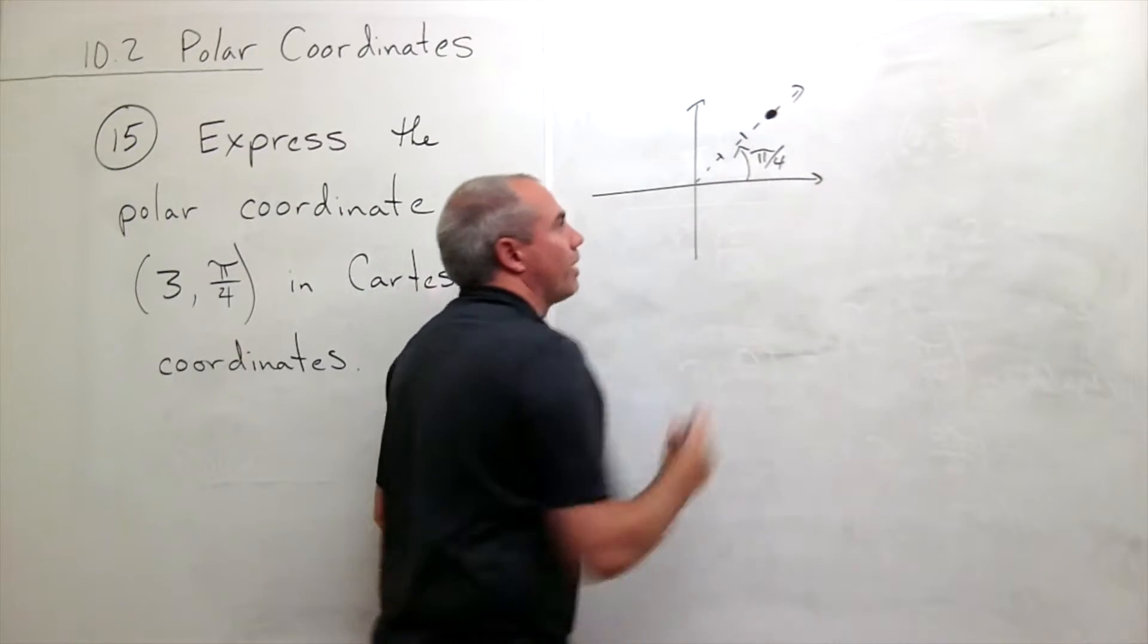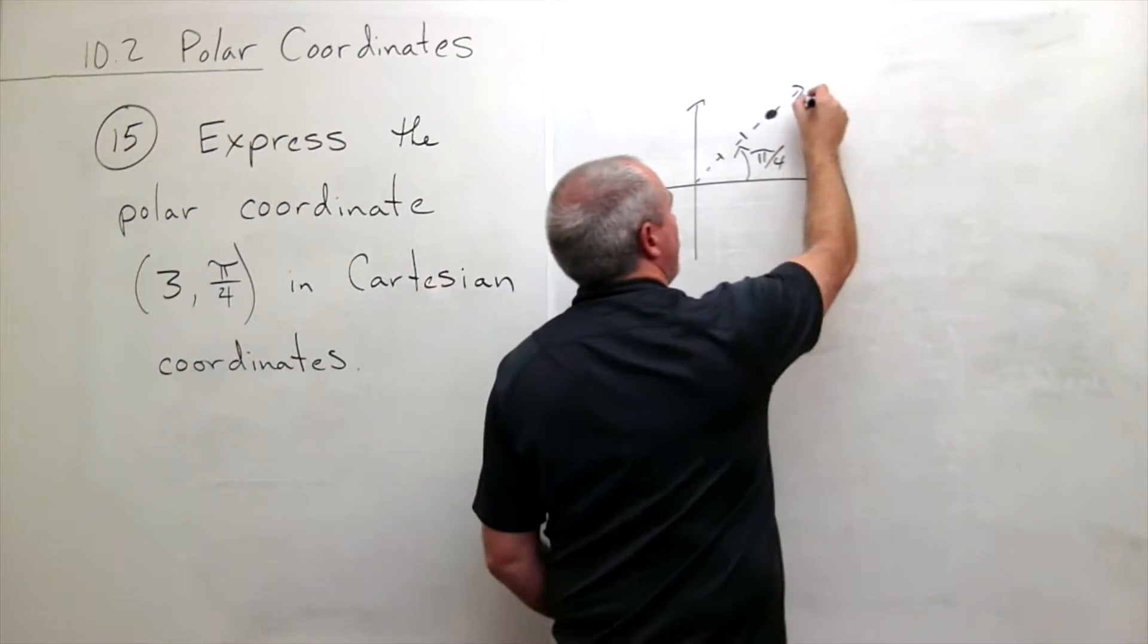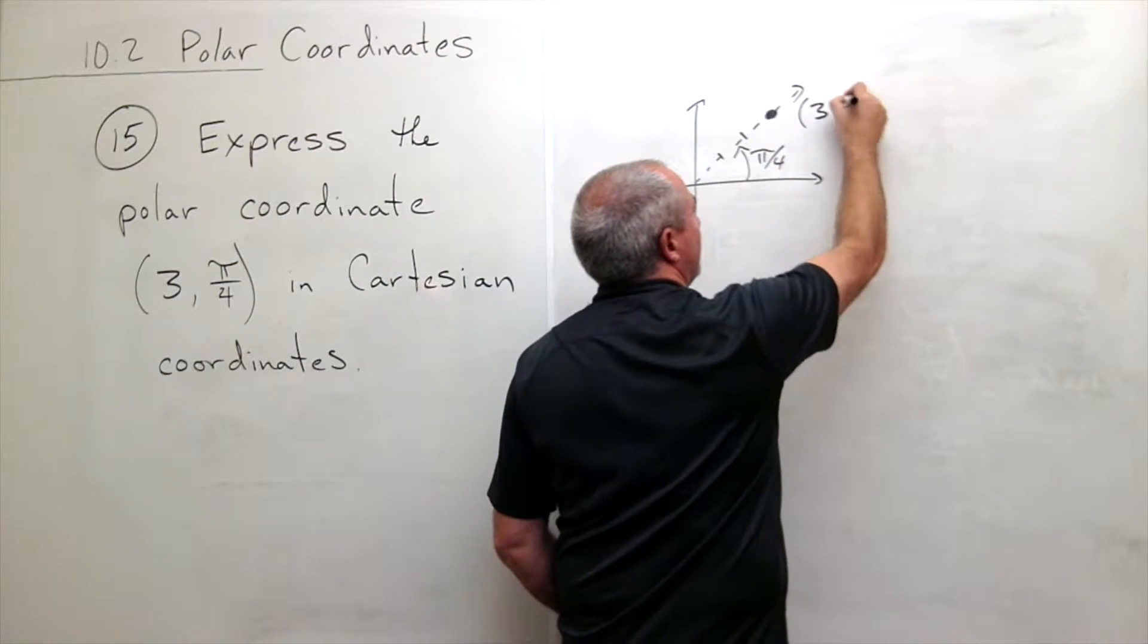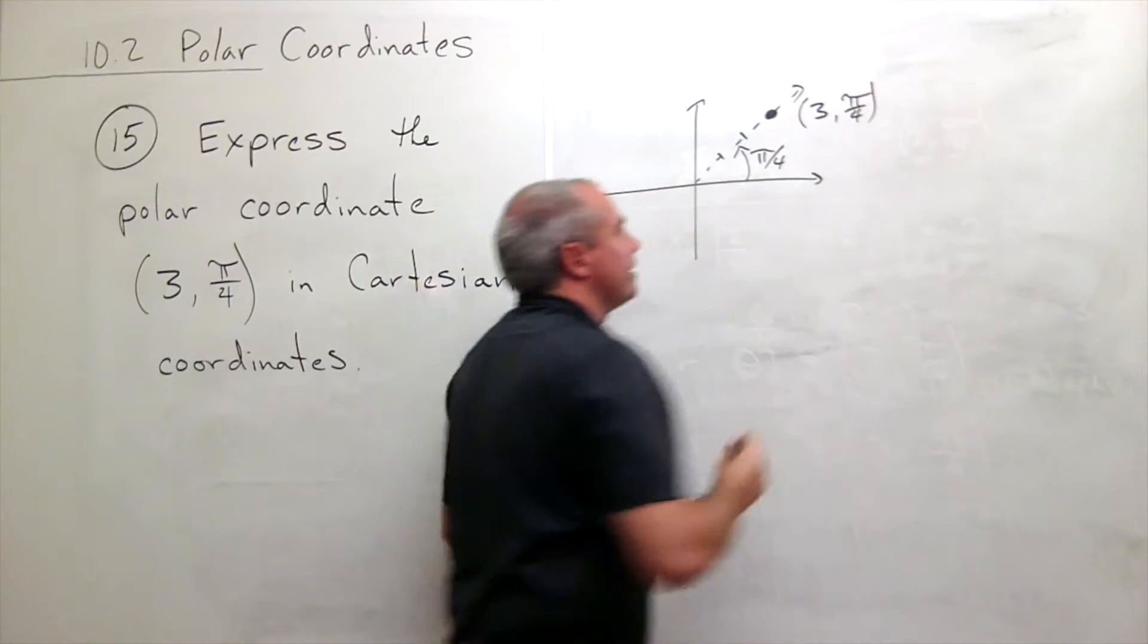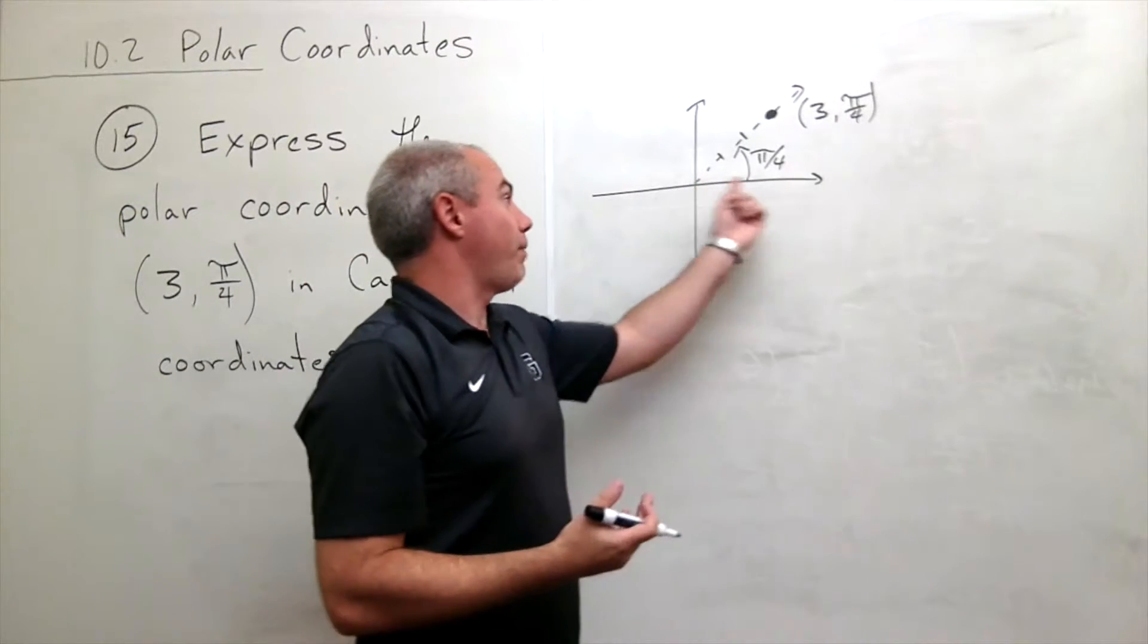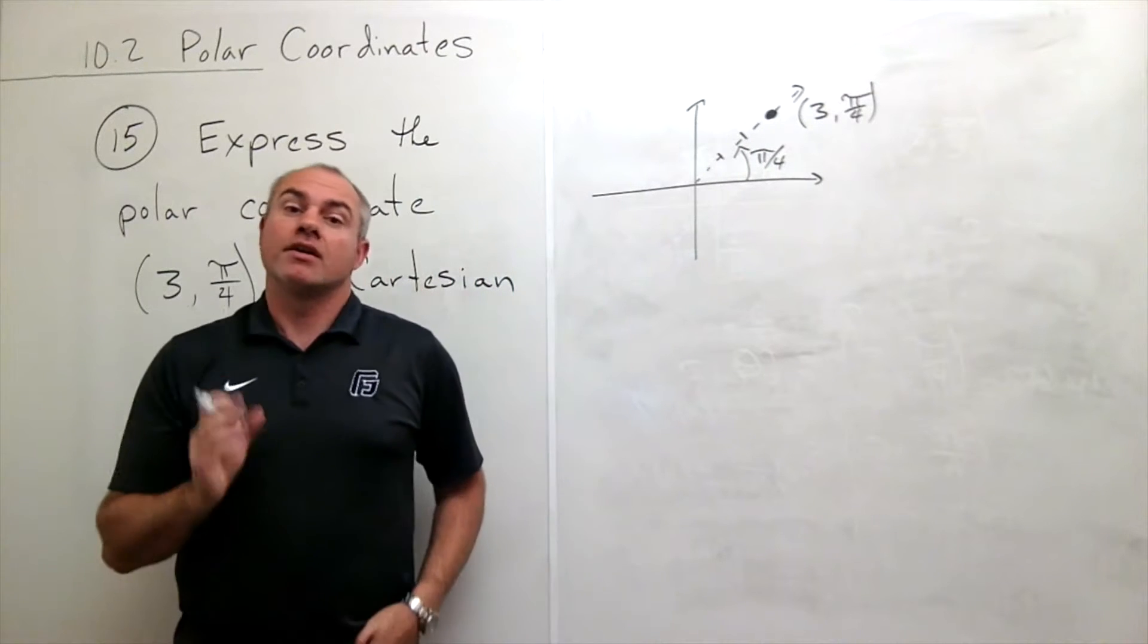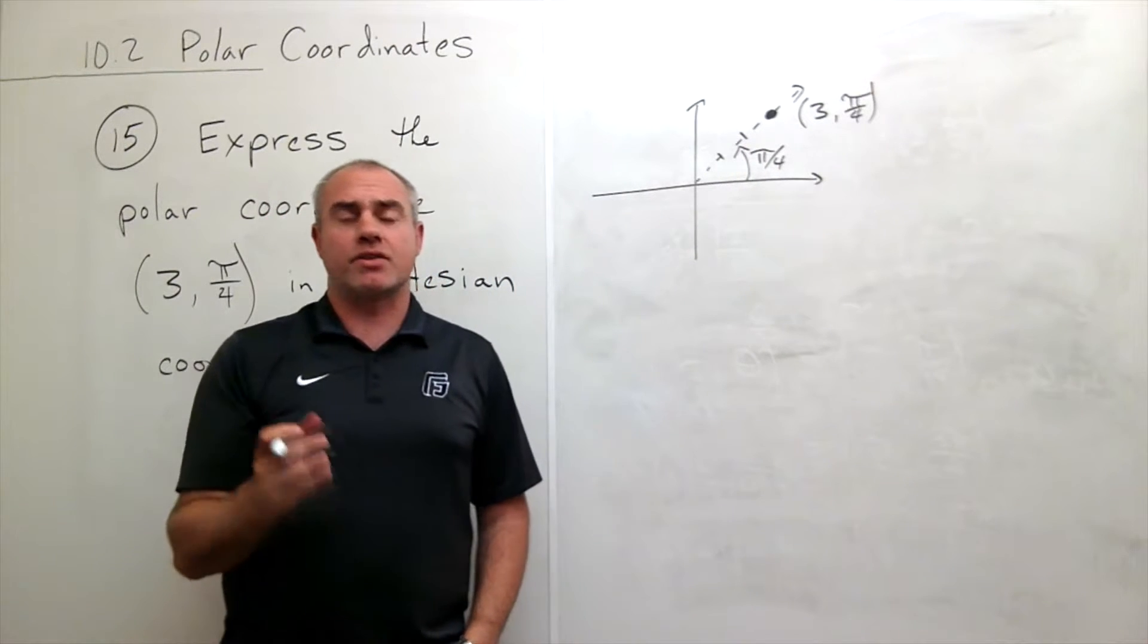And here is my point. So the first thing that I see right off the bat when I look at this point which is (3, π/4) is the x coordinate and the y coordinate better be positive, right? This is a positive x value, this is a positive y value.